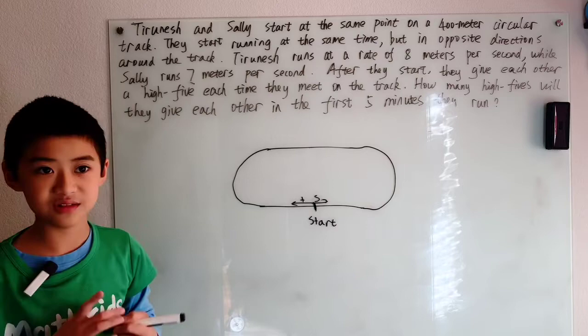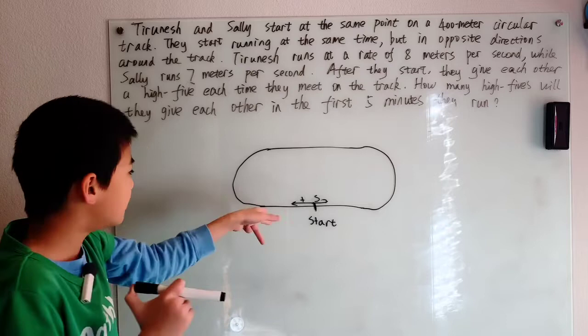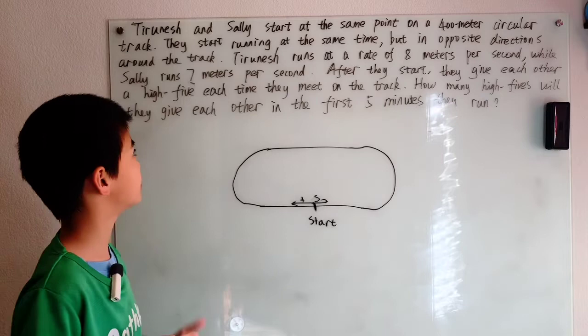Meaning when Tranish runs one lap, Sally is going to be almost there. She's almost going to have run a lap because her speed is only 1 meter per second less than Tranish's. But she's not going to be quite there yet.